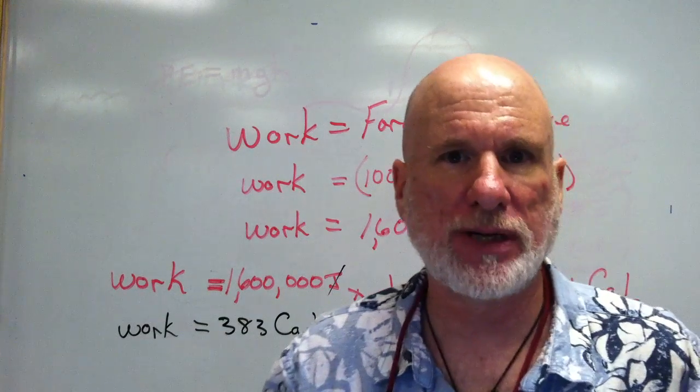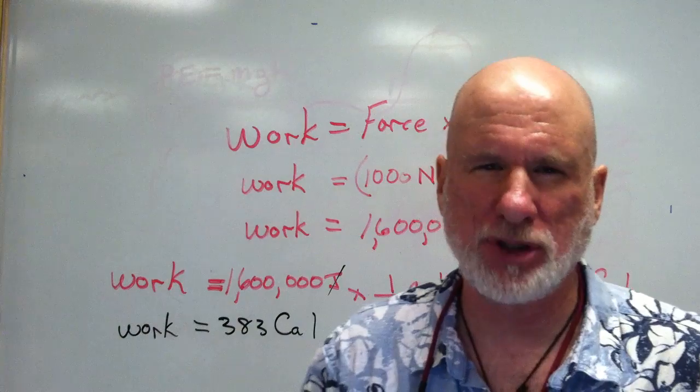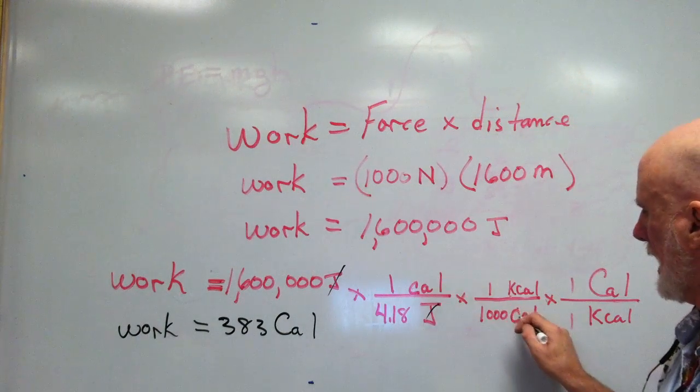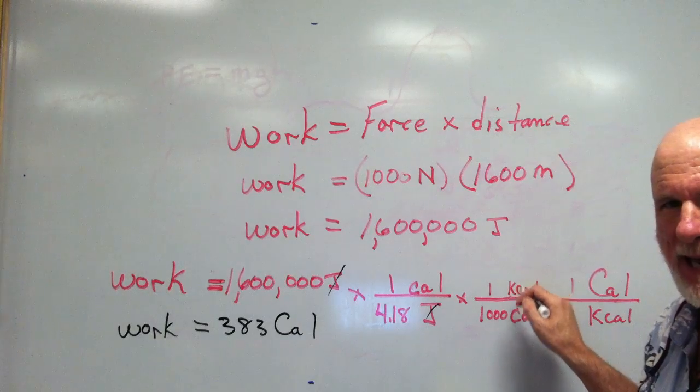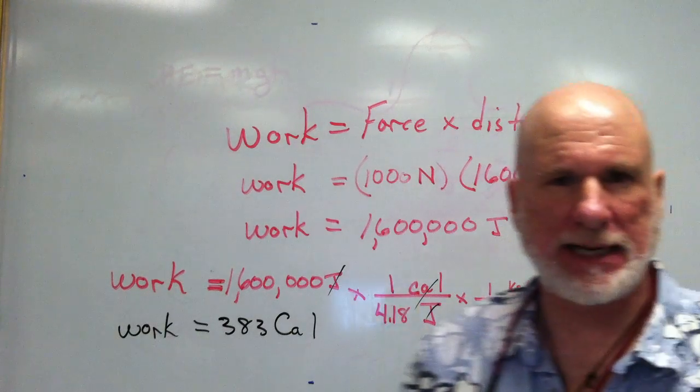Now, convert to kilocalories. I'll show you why I want you to do that in a minute, but try that. Divide by calories, multiply by kilocalories. 1000 calories in a kilocalorie.